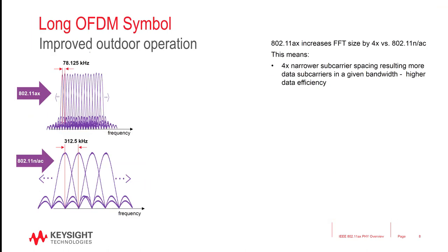Let's now move on to the improved outdoor operation. 802.11ax maintains the same channel bandwidth as AC. However, it increases the FFT size by a factor of 4. This means there are 4 times more subcarriers in a given bandwidth, resulting in 4 times narrower subcarrier spacing. We get frequency domain efficiency and capacity, as it provides 4 times more tones to allocate to multiple users. However, it comes at a price, since the narrow subcarrier spacing is more sensitive to frequency offset, phase noise, as well as sampling clock offsets.